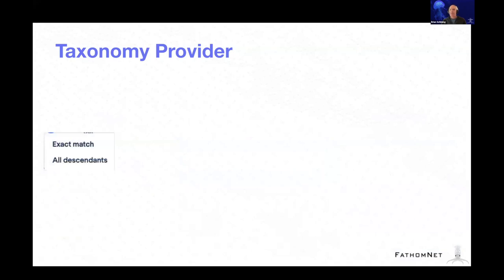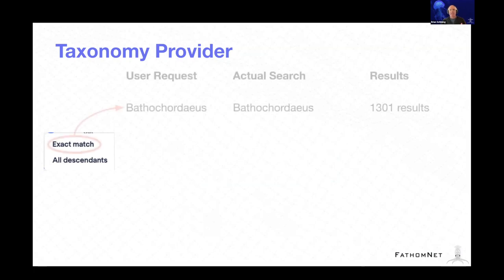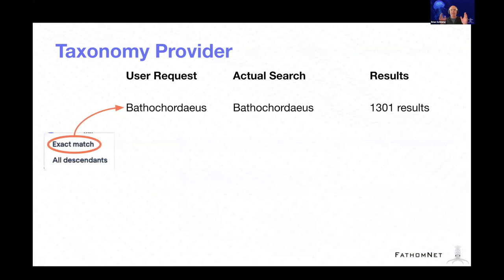The way these work is when you do a search and click the search button, a pop-up appears with two options: exact match and all descendants. You can say, I just want an exact match — search just for things labeled Bathycordeus genus — and that's all you want. It'll return search results matching that term exactly, and in this case you'll get 1,300 results.